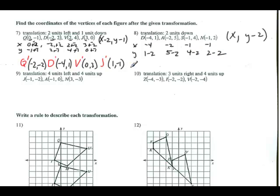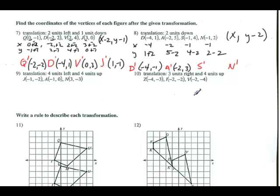So my new points are: D prime at (negative 4, negative 1), A prime at (negative 2, 3), S prime at (negative 1, 2), and N prime at (negative 1, 0). For N prime, X is negative 1 and 2 minus 2 is 0.